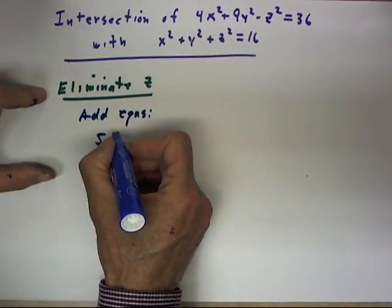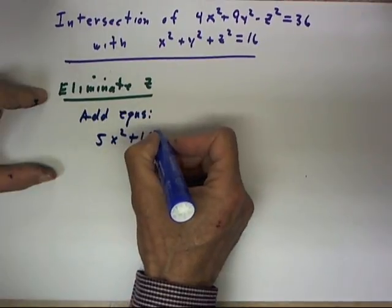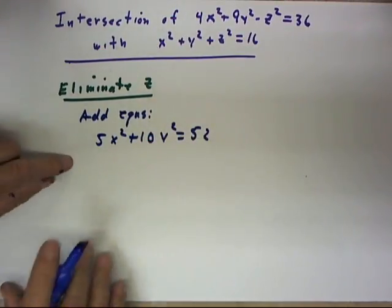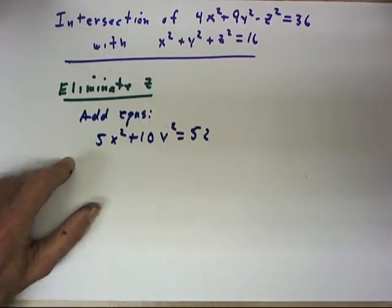We get 5x squared plus 10y squared equals 52. Okay, well, that's an ellipse.